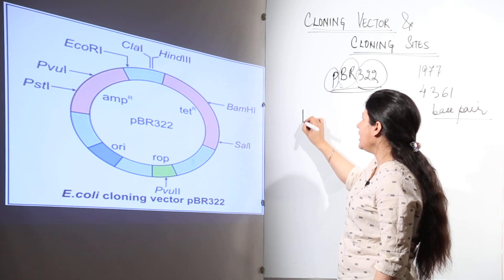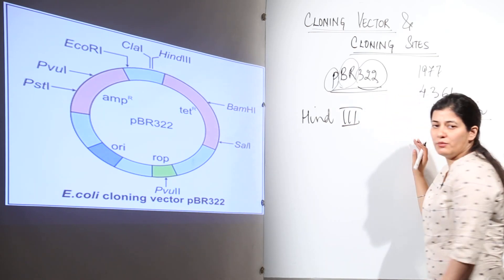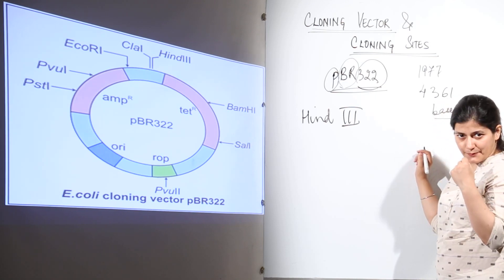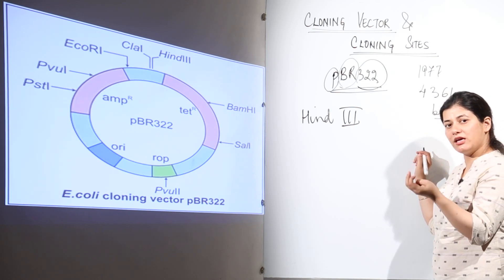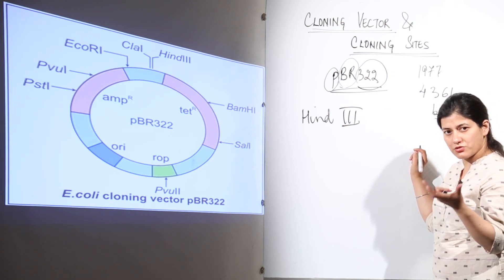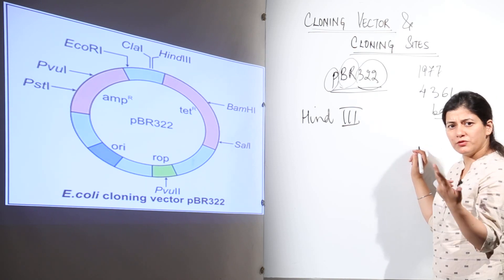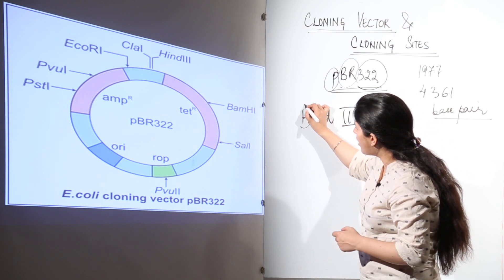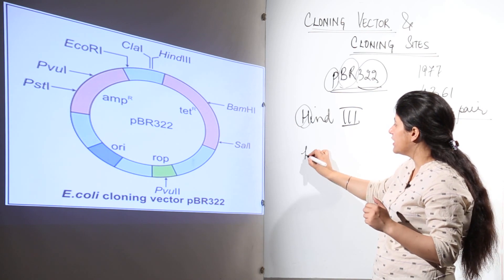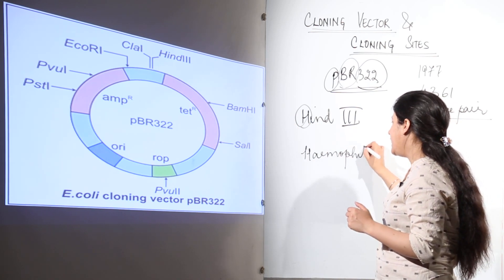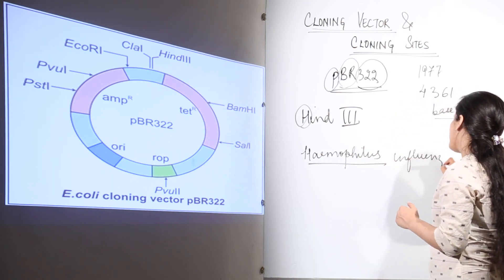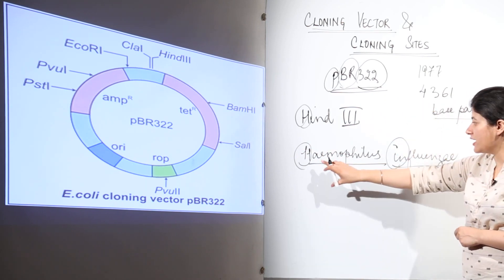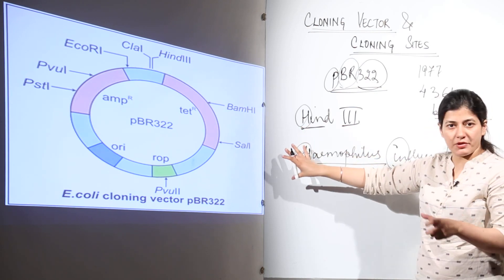HIND 3 is one such restriction endonuclease site. When we discussed restriction endonucleases, we noted that they are named according to the prokaryote they are isolated from. The bacteria produce restriction endonucleases for immunity by cutting viral genomes. For HIND 3, it is taken from Haemophilus influenzae. We take 'H' from the genus name and 'IN' from the specific epithet, giving us 'HIN'.